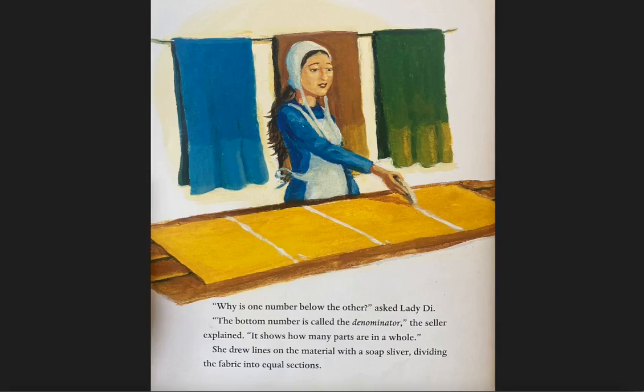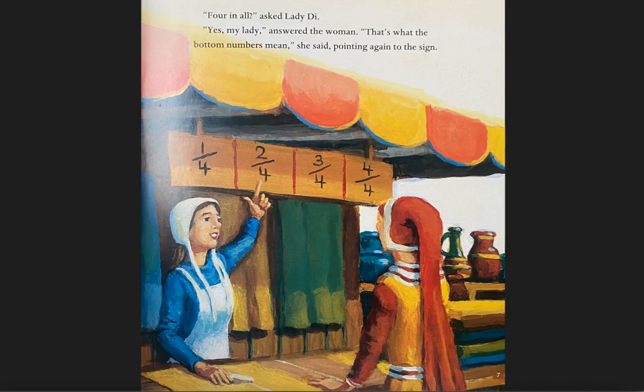"Why is one number below the other?" asked Lady Di. "The bottom number is called the denominator," the seller explained. "It shows how many parts are in the whole." She drew lines on the material with a soap sliver, dividing the fabric into equal sections. "Four in all?" asked Lady Di. "Yes, my lady," answered the woman. "That's what the bottom numbers mean," she said, pointing again to the sign.